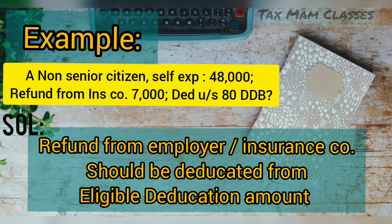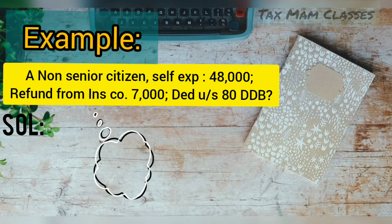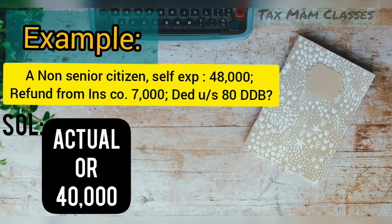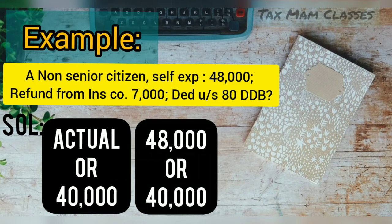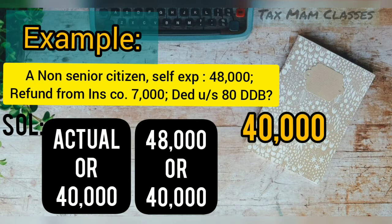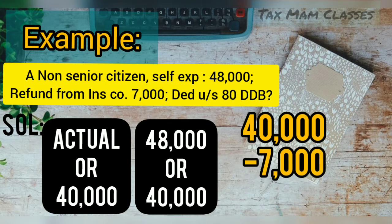The correct process: the insurance recovery must be deducted from the deduction amount, not from the actual amount. So first apply the provision: actual expenditure ₹48,000 or ₹40,000 — whichever is less gives ₹40,000. Then deduct the insurance repaid amount of ₹7,000 from ₹40,000.